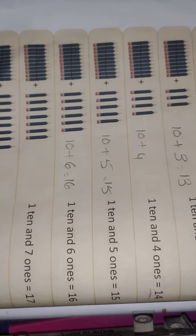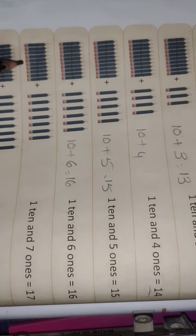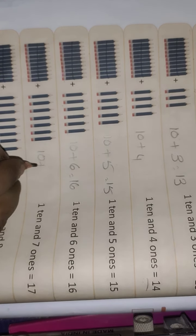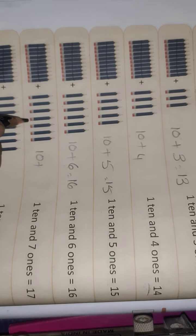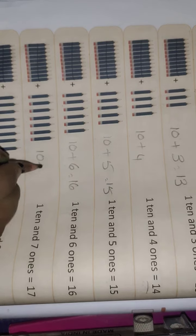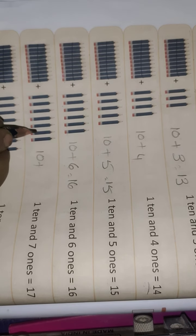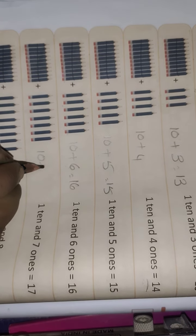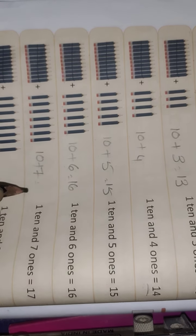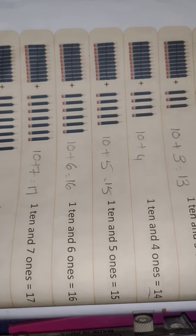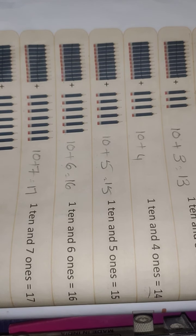Next — 10. How many spare pencils? 7. Count them: 1, 2, 3, 4, 5, 6, 7. 10 plus 7 equals 17.